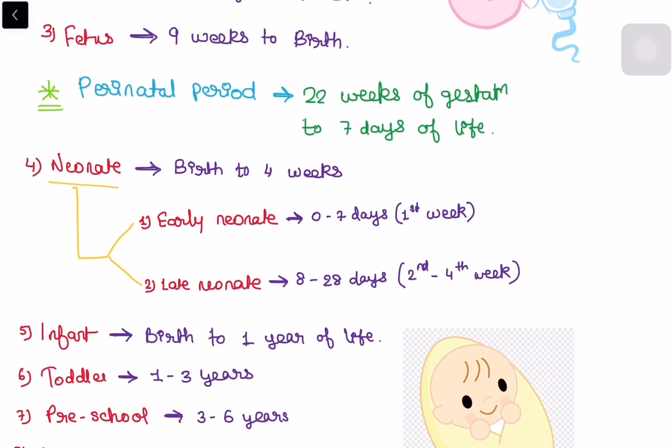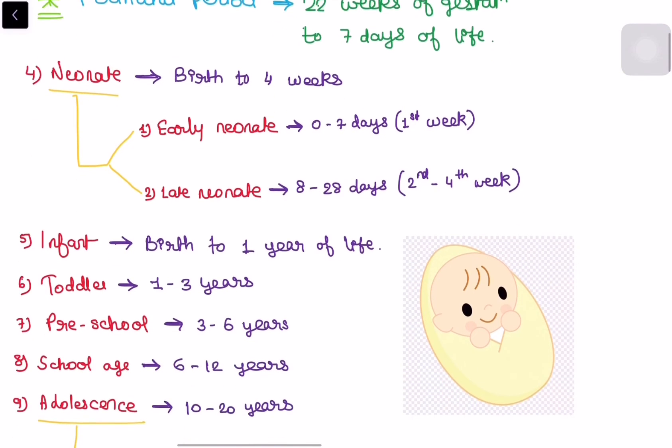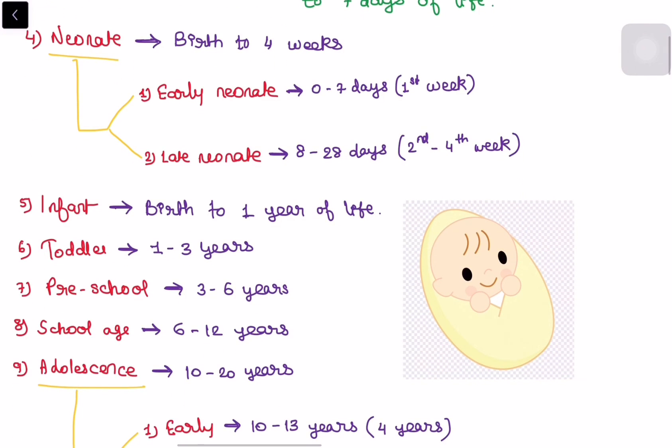Then the fifth one is the infant. Infant is from birth to the one year of life but if the question is asked like if the baby is of five weeks then what will be the answer? Then it will be the late neonate phase because infant is a topic and neonate is a subcategory of it but to be so specific neonate will be the answer, late neonate.